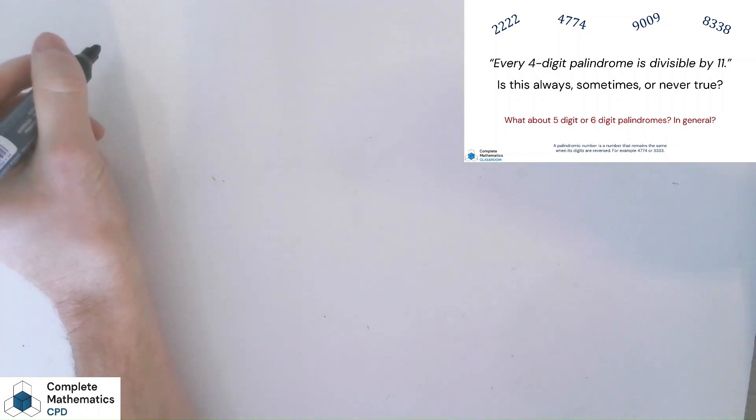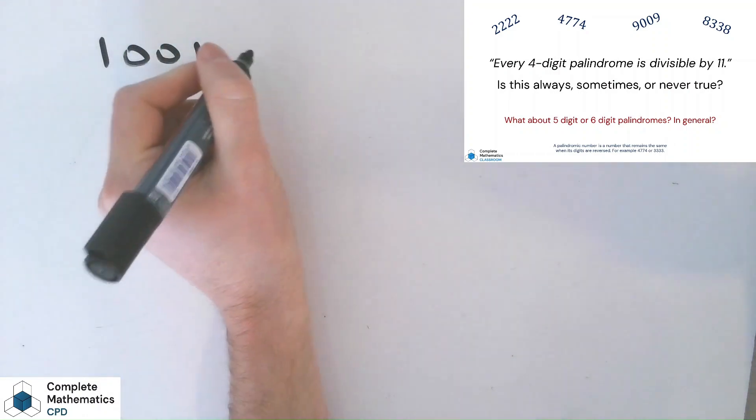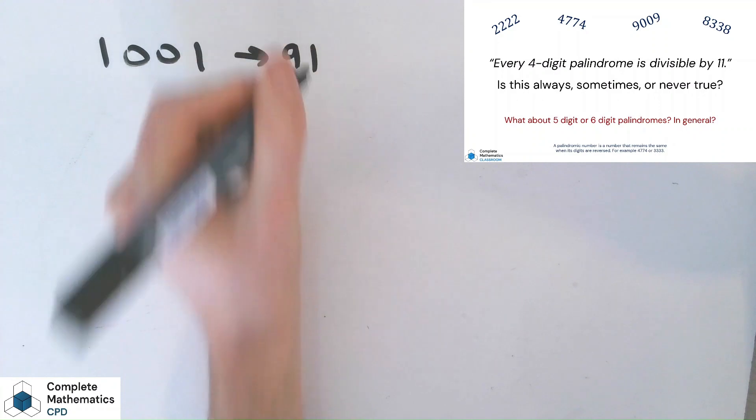So I'll say, what is the smallest four-digit palindrome? And hopefully they'll come back at me saying it's 1001. And when we divide that by 11, we get 91.